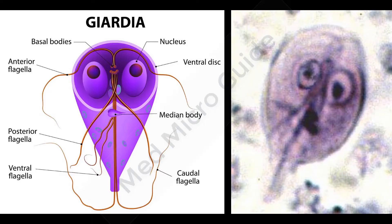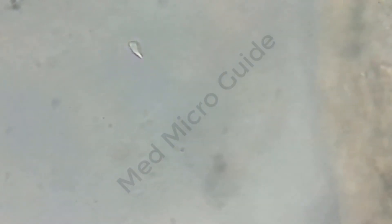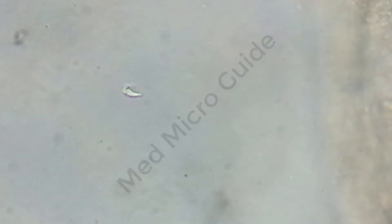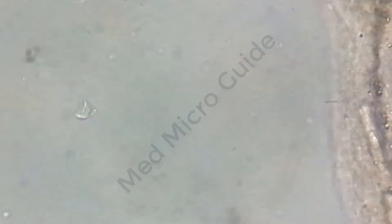The trophozoites of Giardia lamblia are pear-shaped with a ventral disc and four pairs of flagella. Under 40x magnification, we can see the clear falling leaf-like motility of Giardia lamblia. You can observe the shape of the organism — it looks a little bit pear-shaped or sickle-shell shaped, and with the help of those four flagella, the parasite moves in different directions, which is similar to the falling leaf.